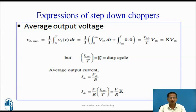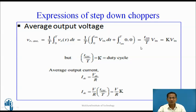Expression for average output voltage of step-down chopper: Since output is pulsating DC, we take the average value. V_0(avg) = (1/T) × integral from 0 to T of V_0(t) dt. During T-on, V_0 = V_in, and during T-off, V_0 = 0. This gives V_0(avg) = (T_on/T) × V_in. Since T_on/T = K (the duty cycle), V_0(avg) = K × V_in, where K is the duty cycle. Average output current I_dc = V_dc/R = (K × V_in)/R, so I_dc = (V/R) × K.